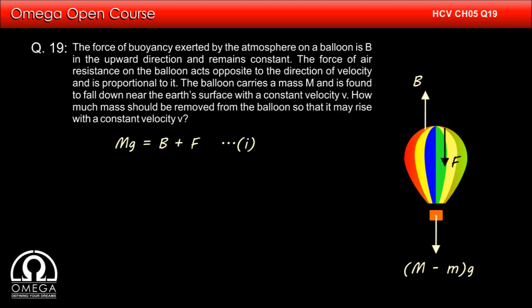Also since the magnitude of the air resistance is directly proportional to the speed of the balloon and its velocity in upward direction is same as its downward velocity, the magnitude of air resistance remains the same.